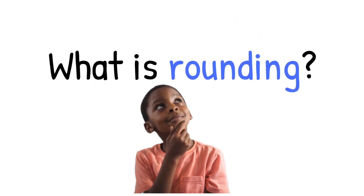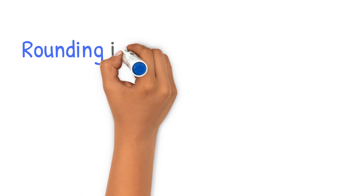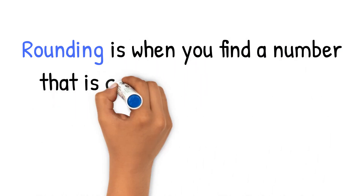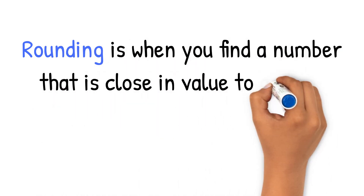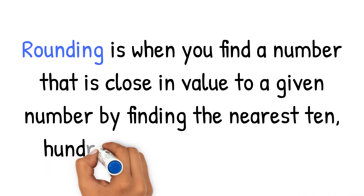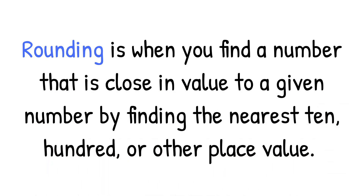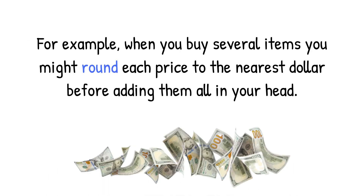What is rounding? Rounding is when you find a number that is close in value to a given number by finding the nearest 10, 100, or other place value. For example, when you buy several items, you might round each price to the nearest dollar before adding them all in your head.